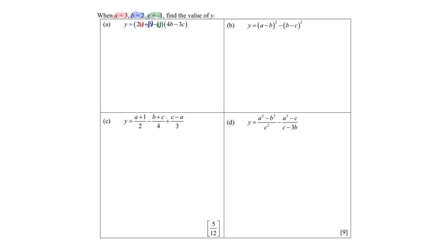b is my blue color, c is indicated by color as well. So y will be equals to — because I have brackets now to prevent confusion, I use a square bracket: 2 times 3, plus my b which is 2, minus my c which is negative 1. And this one multiplied by 4 times 2 minus 3 times negative 1.